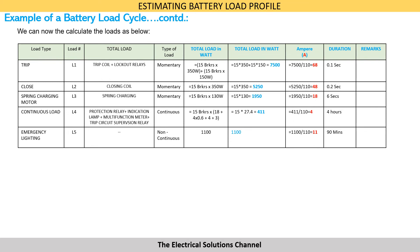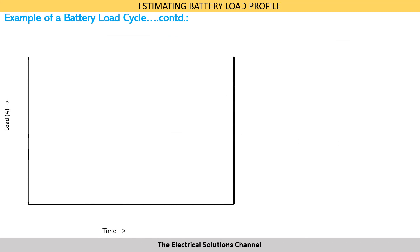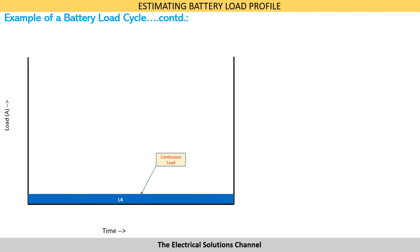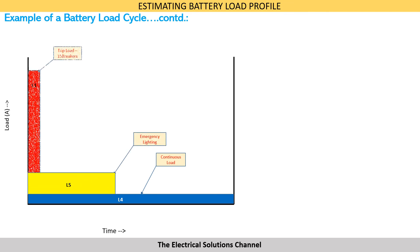The duration of the continuous load in our example will be approximately 4 hours. The load for emergency lighting works out as 11 amps, with a duration of 90 minutes. Once the individual loads have been calculated, we can compile these loads in a graphical form as per the sequence of operation discussed earlier.